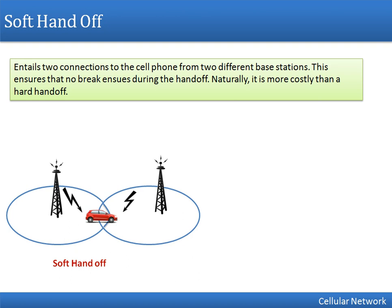Soft handoff is the reverse scenario. In soft handoff, when a person moves from one cell to another, it will first establish a connection to the new base station, and once that connection is done, it will break the old one. So when the user is moving, at a point in time the mobile will have connections to two base stations simultaneously. Once the new connection is successfully established, the old connection is then broken. Soft handoff says: make first, then break.